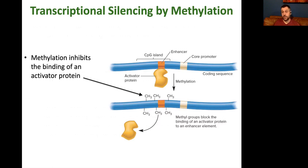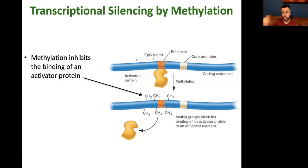There are a few different ways that methylation of DNA can affect transcription. Here is an example showing DNA in blue, with a CpG island next to the core promoter of a gene. Here is the coding sequence that will need to be transcribed for gene expression, and here's an activator protein — a transcription factor — binding to an enhancer sequence. If the CpG island becomes methylated, it blocks the recruitment of this transcription factor to the enhancer, shutting down the gene.